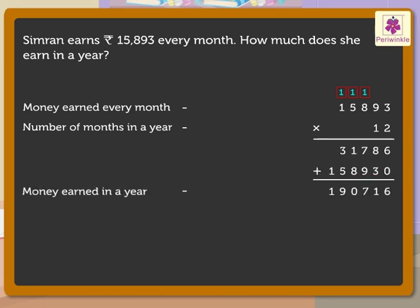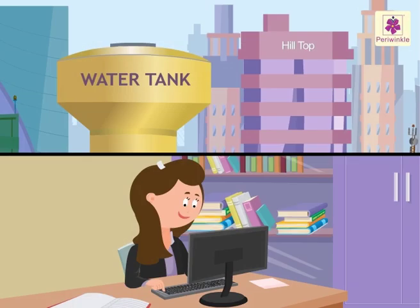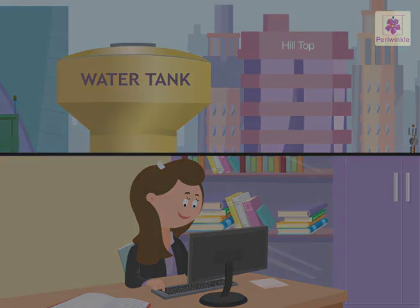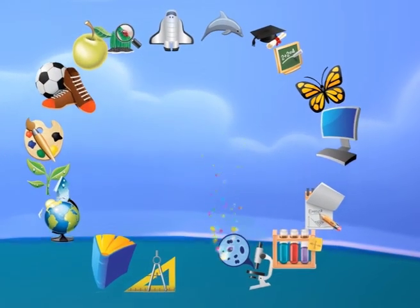Thus, Simran earns 1 lakh 90,716 rupees in a year. We learned solving multiplication stories and writing statements so quickly!